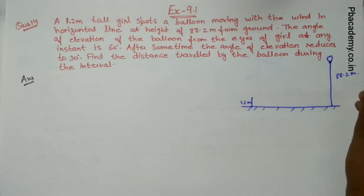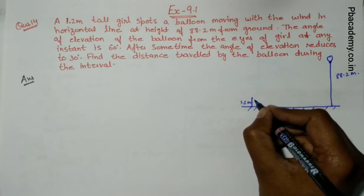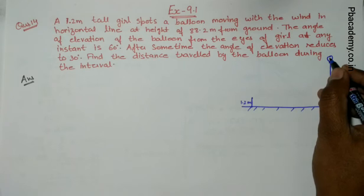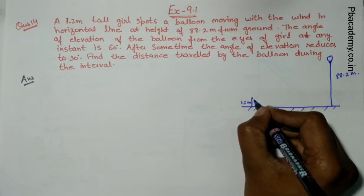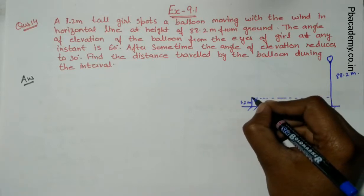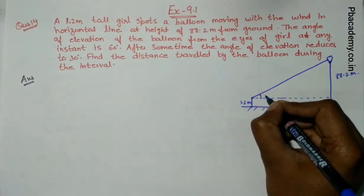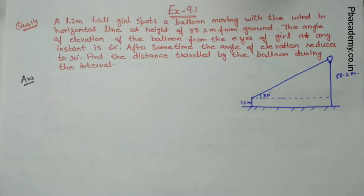When the girl looks at the air balloon, the angle of elevation is given as 30 degrees. The angle of elevation is from 1.2 meter height from the ground, so we take this as an imaginary line. As the girl looks at the balloon, the angle of elevation is 30 degrees.